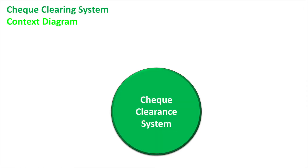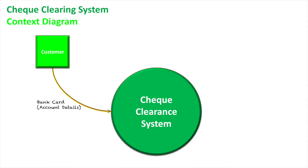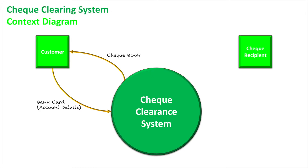Now let's look at the context diagram of this system. Here is the check clearing system — as the customer, the first thing needed is to obtain a checkbook. I first give my account details, retrieved through my bank card that links me to my account, and sometimes also show my driver's license to verify it. Once authenticated, the customer receives a checkbook and can begin writing checks to people. The customer gives out a check to a check recipient, who then takes the bank check to the bank and submits it.